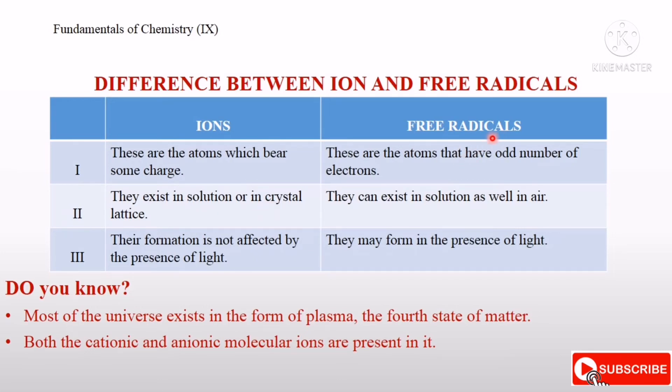Ions exist in solution or in crystal lattice, whereas free radicals can exist in solution as well as in air. And ions' formation is not affected by the presence of light, whereas free radicals may form in the presence of light or heat energy.